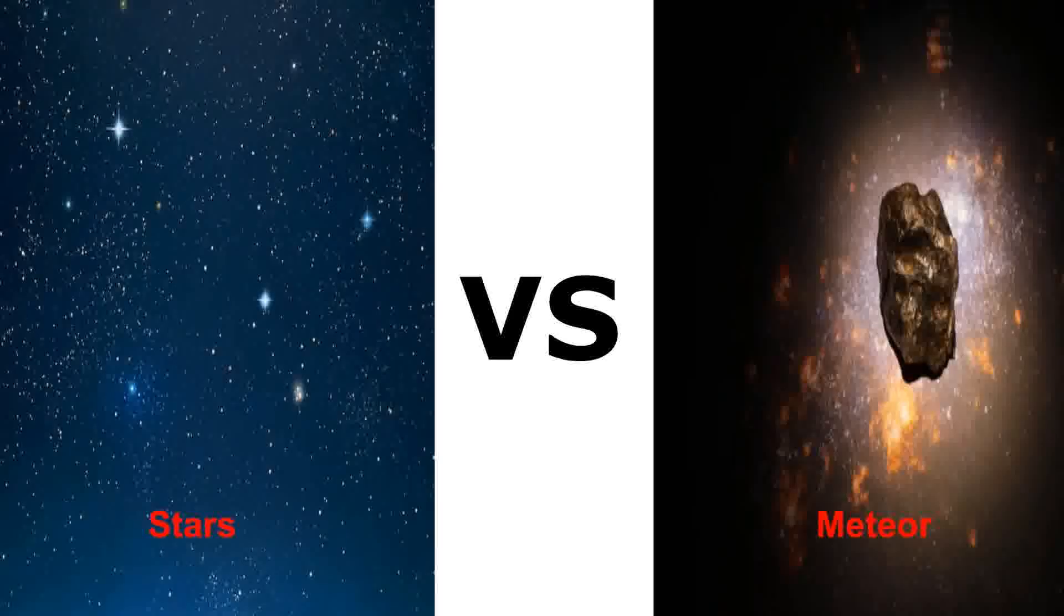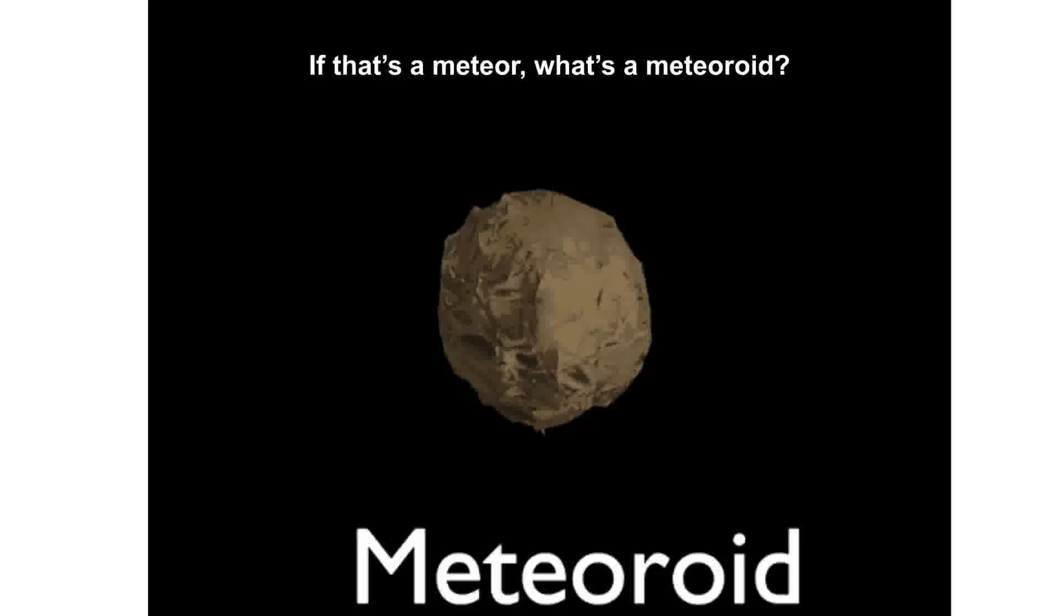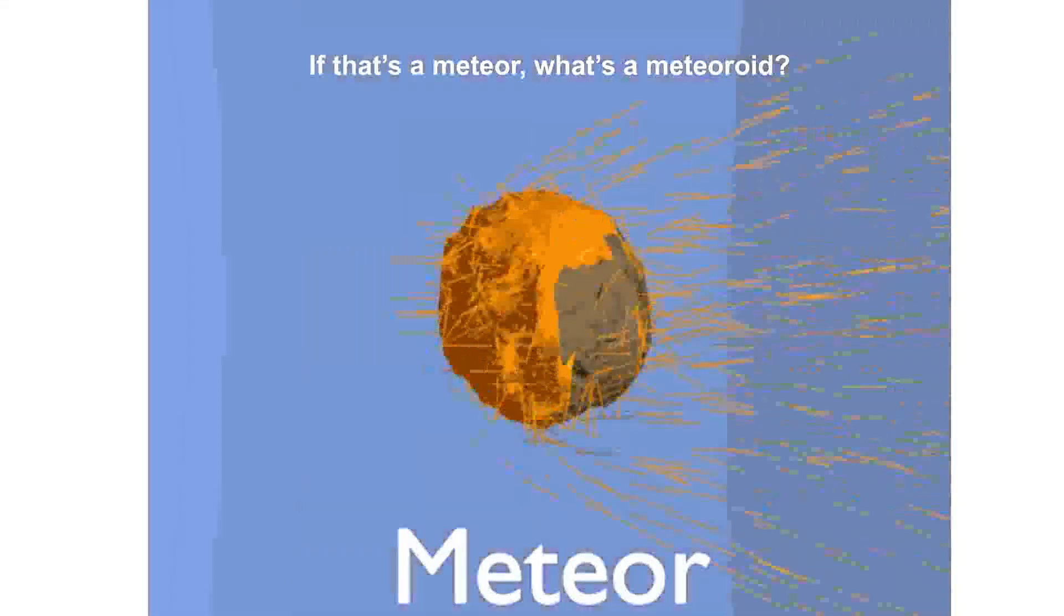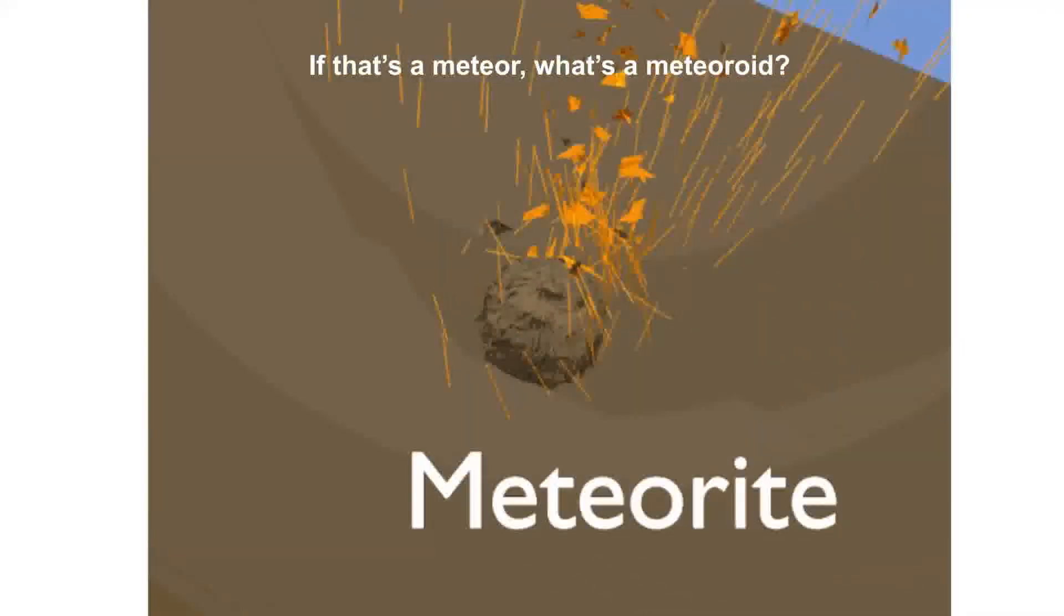A meteoroid is a rock in space that ranges from a dust grain to a small asteroid. And as you can see in this animation, this is a meteoroid in space, and then it turns into a meteor as it goes into the atmosphere.